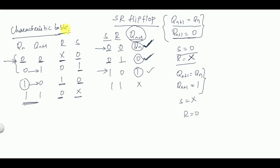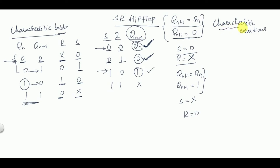You can obtain the characteristic table directly from the truth table — that is the key concept. It is your choice: if you have a good memory you can directly remember the characteristic table, or you can derive it from the truth table during the exam. Next is the characteristic equation.